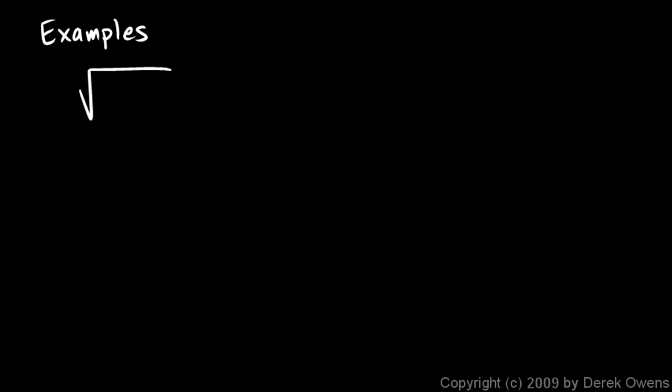We're back and we're continuing our examples of simplifying square root expressions, or simplifying radical expressions. Here's our next example: the square root of 20a squared over b cubed.